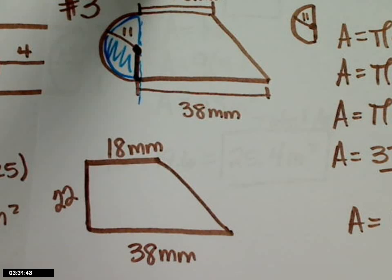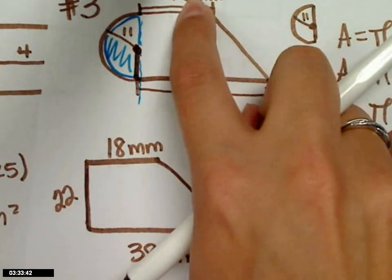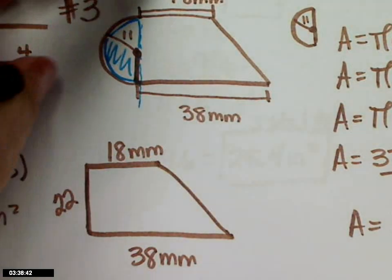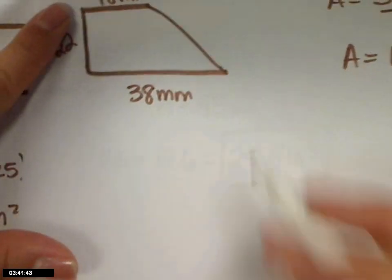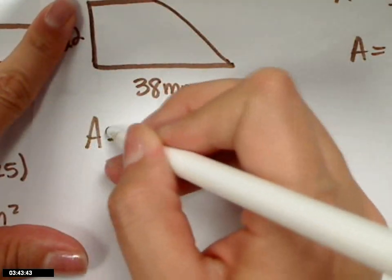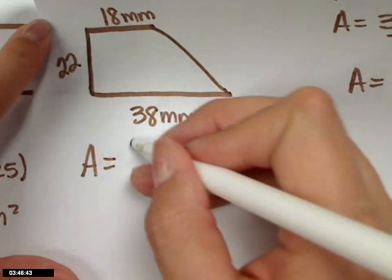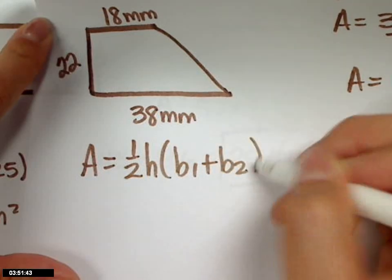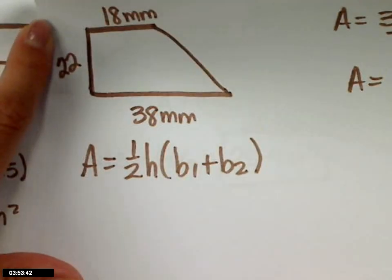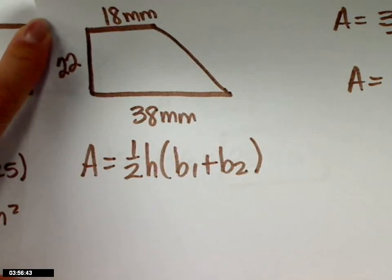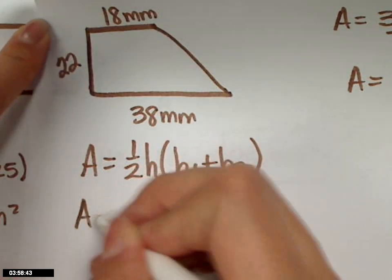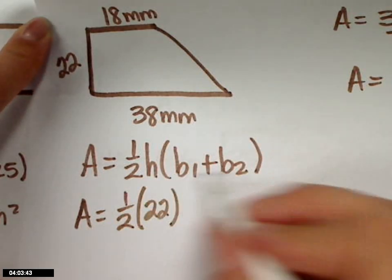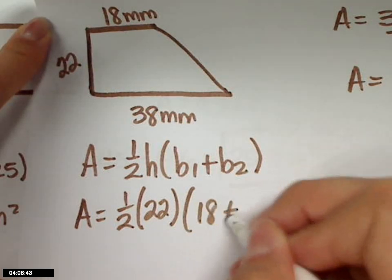What's the formula for area of a trapezoid? Good. And it's on your formula sheet. So half the height times base 1 plus base 2. What's my height? 22. And my bases, we've got 18 and 38.